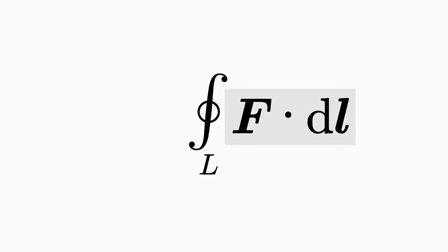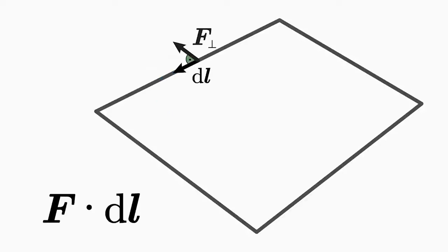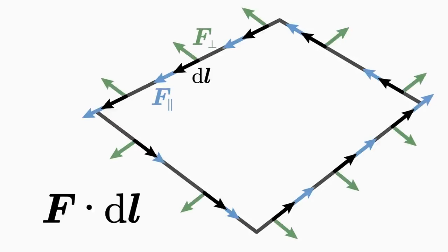Now the scalar product between the vector field f and the line element DL is formed. You already know what the task of the scalar product is. First, split up the vector field into two parts: into f parallel, which is parallel to the DL element, and into f orthogonal, which is orthogonal to the DL element. The scalar product with the DL element eliminates the orthogonal component without touching the part of the vector field parallel to the DL element. Since at each location the DL element points along the line, only the part of the vector field that runs along the line L is considered in the scalar product. The other part of the vector field drops out.